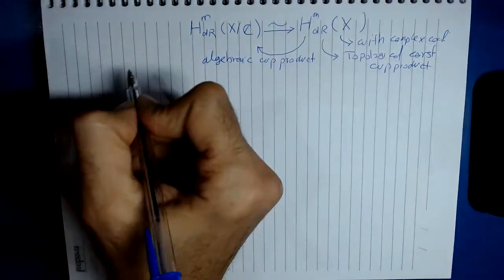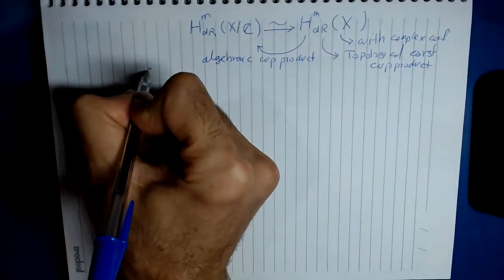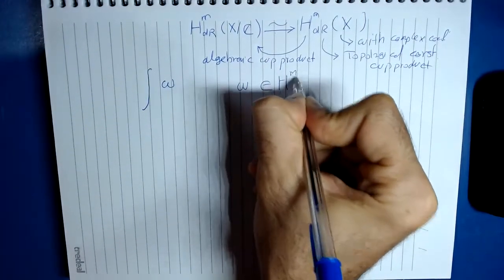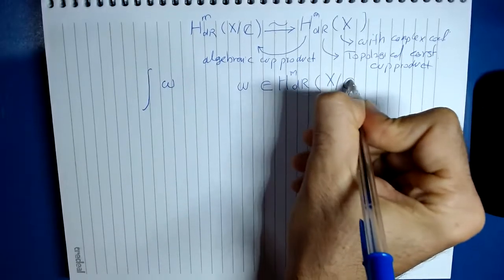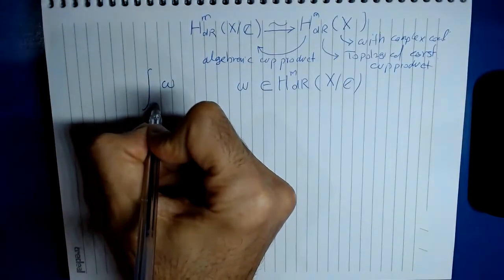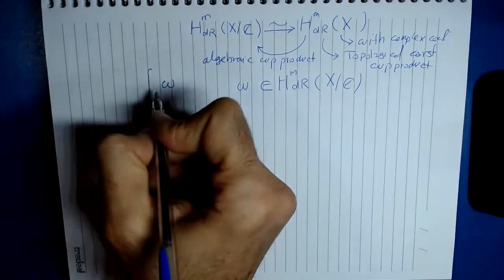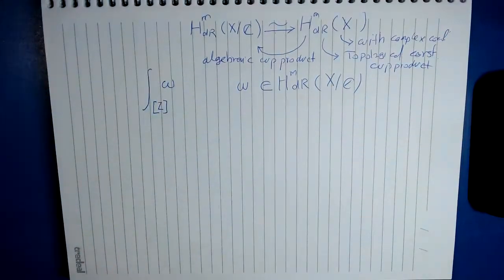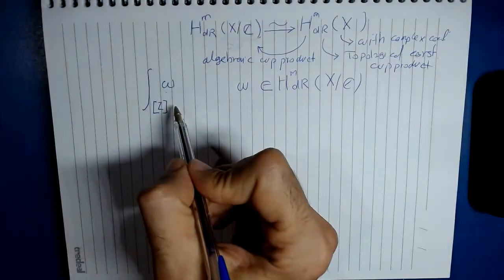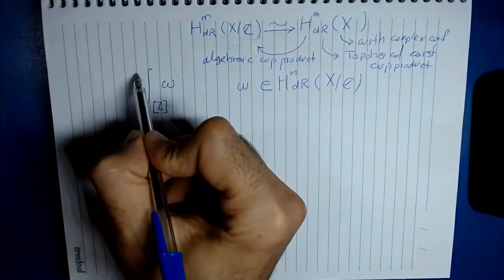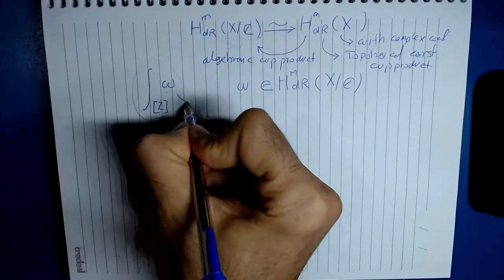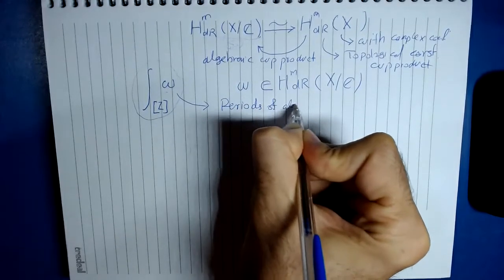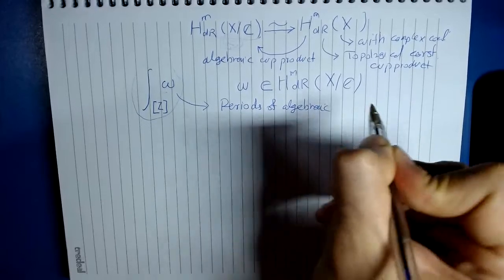For example, algebraic coproduct. In particular, what we can do, we can introduce this kind of integration: omega in H^m de Rham X over C. Since the topological cycles, we cannot all of them recover by algebraic geometric method, so we just integrate over the homology class of the algebraic cycle. The main objective of the course is the computation of these numbers, that we will call them periods of algebraic cycles.